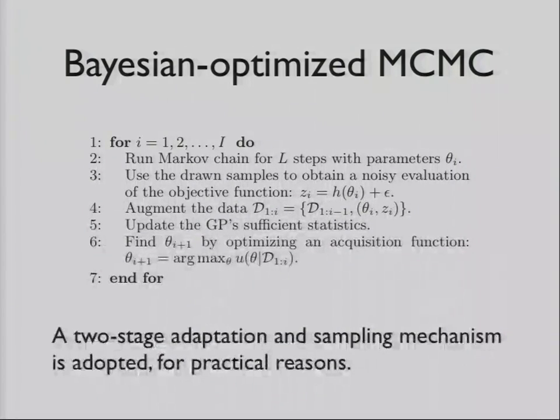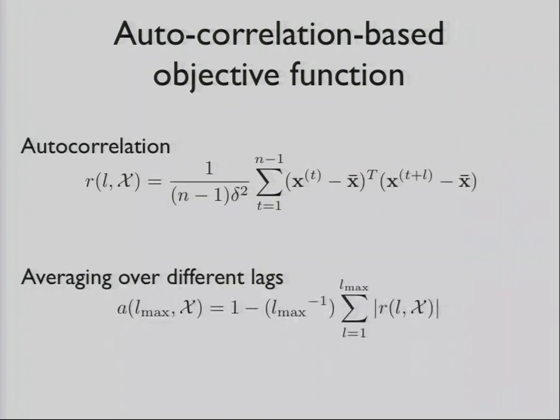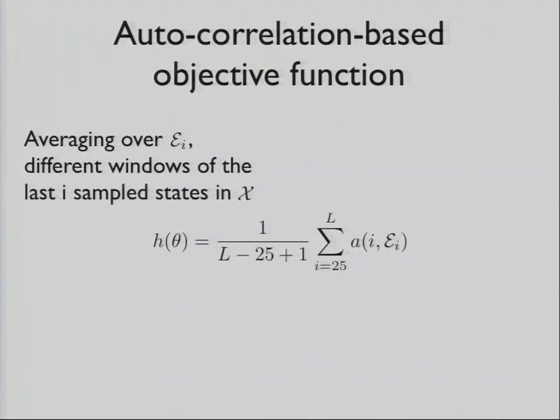I'll talk a bit about the components that are involved here. The autocorrelation function is what we base our objective function on, but we couldn't just use this. One of the problems is that we're not sure what time lag to look at, so we just averaged over all of them for a certain length. We don't care about the sign of that autocorrelation, so we absolutely valued it, and then we made it a maximization instead of a minimization. The other problem is that when you switch parameters, the samples you're looking at are not actually representative of the parameters that you're using. So we averaged over the last few sample state windows.